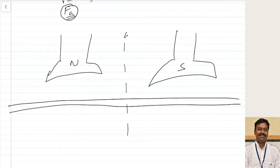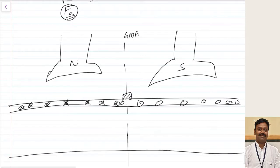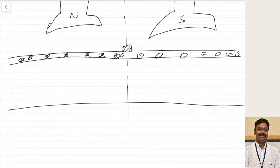This is the geometrical neutral axis and these are the conductors. Initially the brush is kept at the geometrical neutral axis. The EMF induced in conductors under the north pole will be cross, and under the south pole will be dot. After that, we draw the MMF wave by extending the lines.